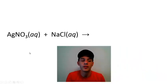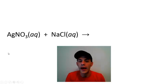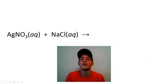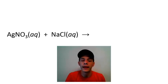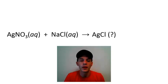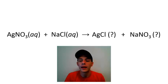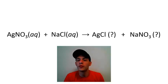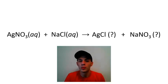Consider this reaction between aqueous silver nitrate and aqueous sodium chloride. This is a double replacement reaction — two ionic compounds coming together. We need to predict the double replacement products: silver pairs up with chloride to make silver chloride AgCl, and sodium pairs up with nitrate to make sodium nitrate NaNO3. Both are given question marks because we haven't yet determined whether these products are soluble or insoluble, and therefore aqueous or solid.